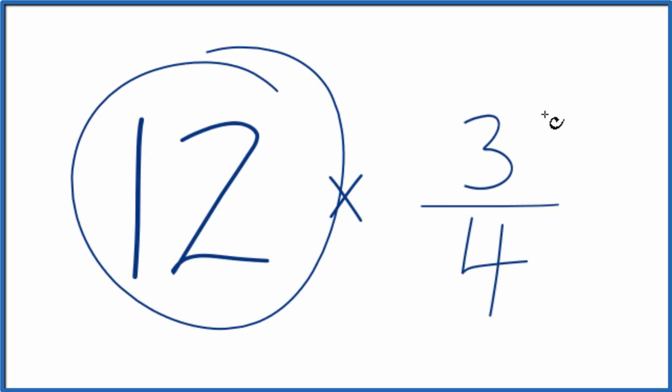Here's how you multiply 12 times 3 fourths. So you could just take 3 fourths and add it together 12 times, and that would give you the correct answer for 12 times 3 fourths.